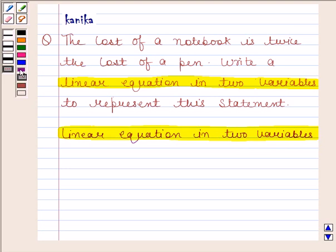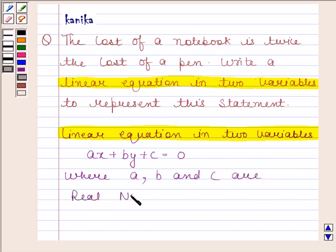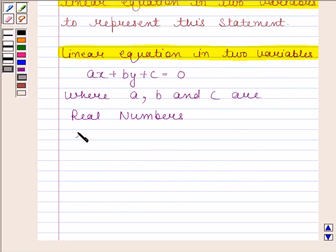Any equation which can be put in the form ax plus by plus c is equal to zero, where a, b and c are real numbers and a and b are not both zero, is called a linear equation in two variables.